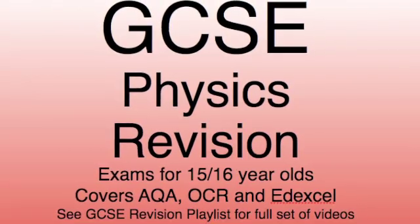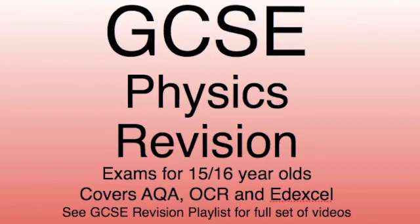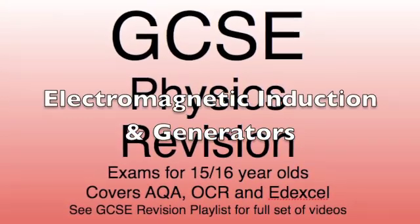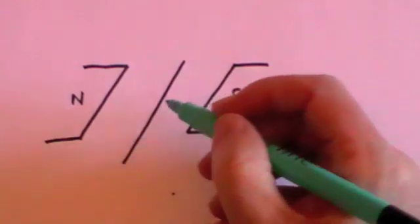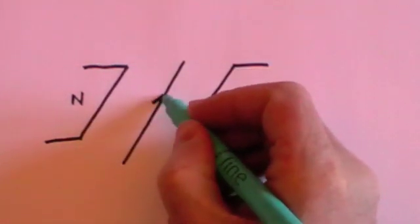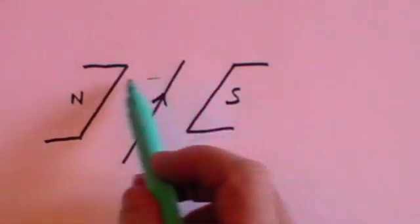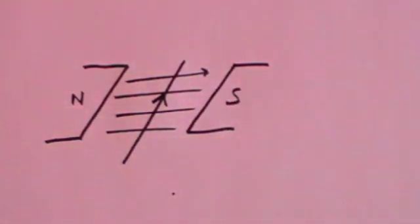Hello, today we're continuing with our series on GCSE physics revision, looking at electromagnetic induction and generators. In the previous video on magnetic fields we drew a diagram. We said that if you have a magnet with a north side and a south side, and a wire travelling in that direction with a current in that direction, then there will be a field between the north and south, but there is also a magnetic field around the wire when the current flows. Those two magnetic fields interact and generate a force, and we identified that the way to calculate the direction of that force is using Fleming's left-hand rule.